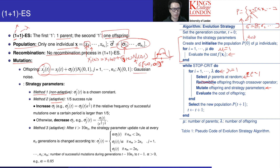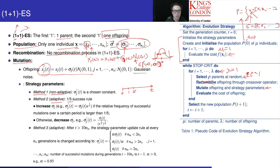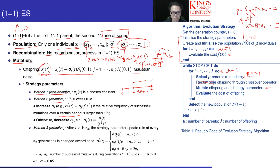The second method is called the one-fifth success rule. We create a window over certain iterations. For example, at the current point t, we look back at t minus 1, t minus 2, and so on — creating a window of perhaps 10 iterations. If we would like to determine what value of sigma to use at this point, we check the number of successful mutations over this window period.